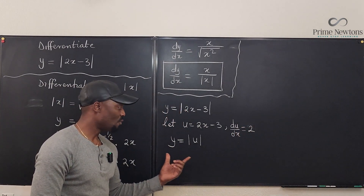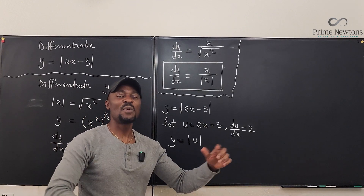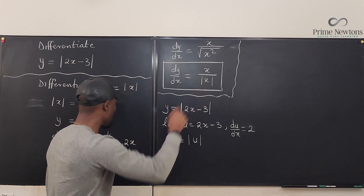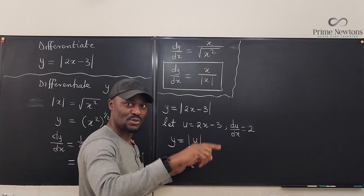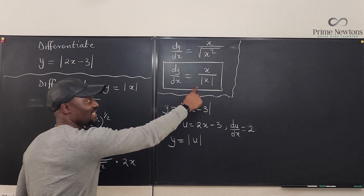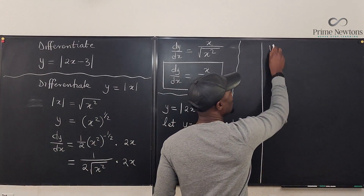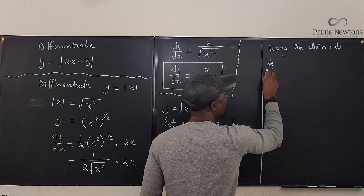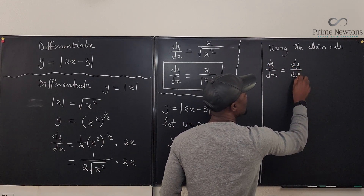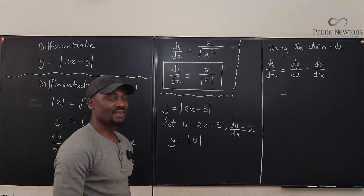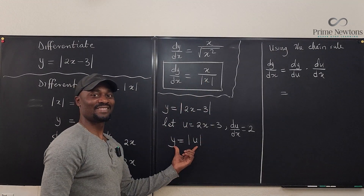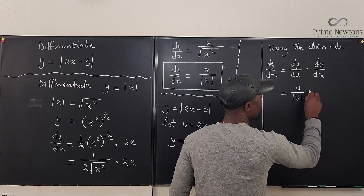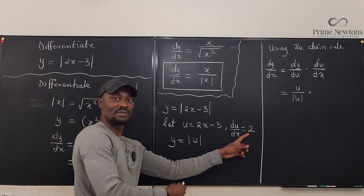We have y equals the absolute value of u. Using the chain rule, dy/dx equals dy/du times du/dx. We already know that for an expression like this, dy/du equals u over the absolute value of u. Multiplied by du/dx, which is 2, our answer so far is 2u over the absolute value of u.